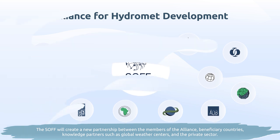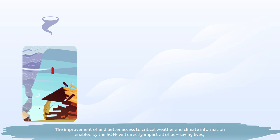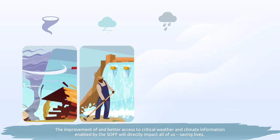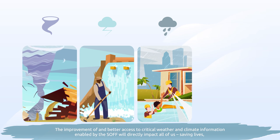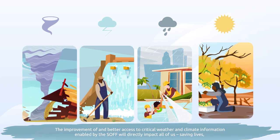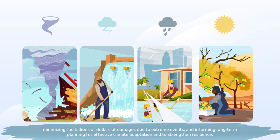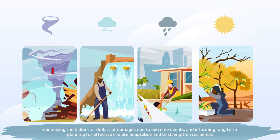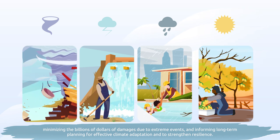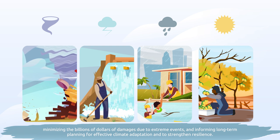The improvement of and better access to critical weather and climate information enabled by the SOF will directly impact all of us, saving lives, minimizing the billions of dollars of damages due to extreme events, and informing long-term planning for effective climate adaptation and to strengthen resilience.